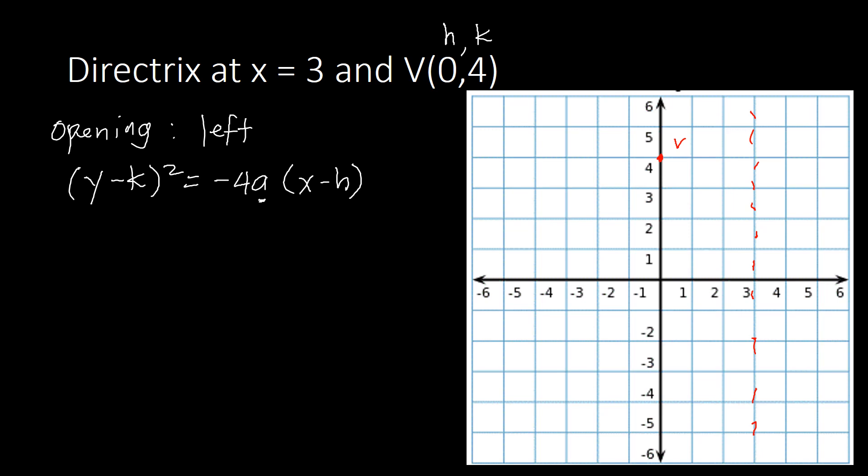Let's find a. Here, a is the distance from the vertex to the directrix. Counting from the vertex toward the directrix, we count 1, 2, and 3 — that's 3 units. So our a is equal to 3.